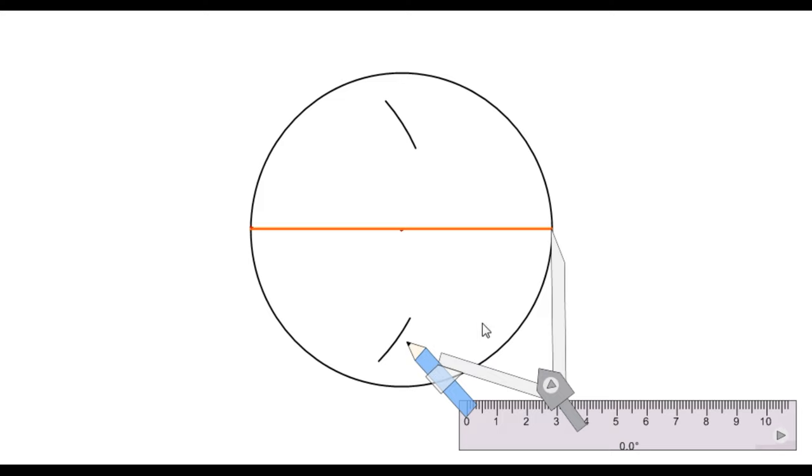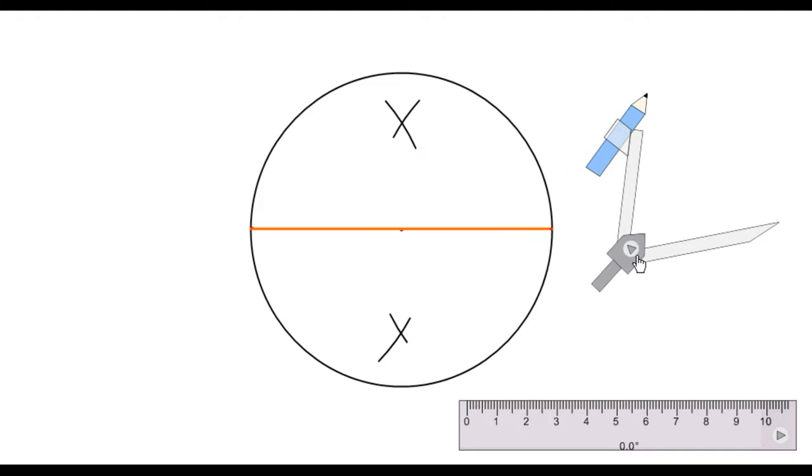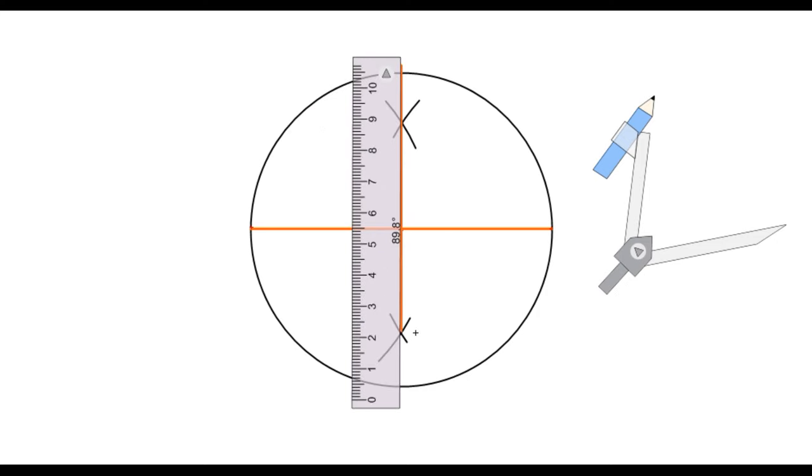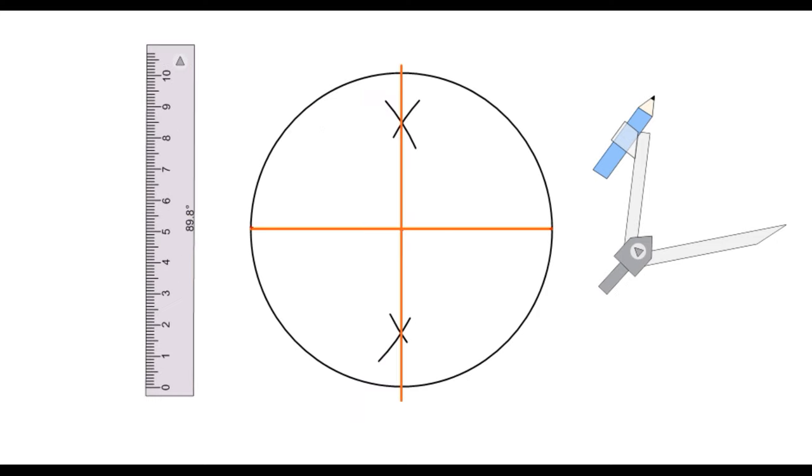As you can see, we took more than half of the distance of the diameter and drew two arcs from one endpoint and two more arcs from the second endpoint. Now we will connect these two points at the intersection of the arcs to get the perpendicular bisector.